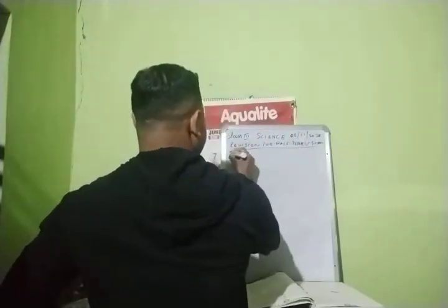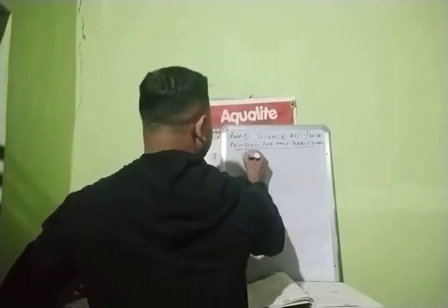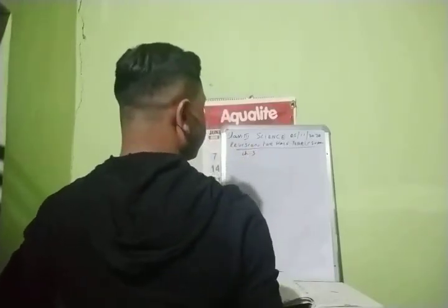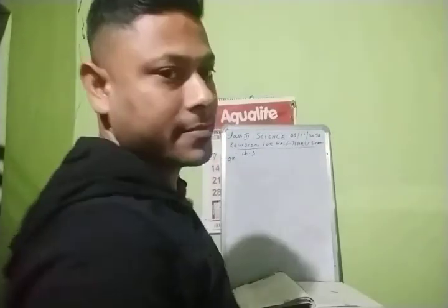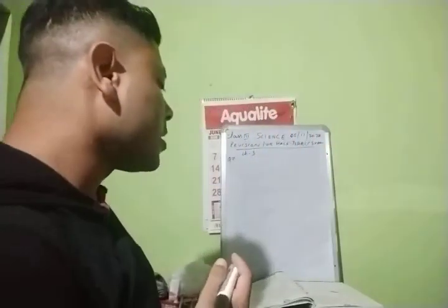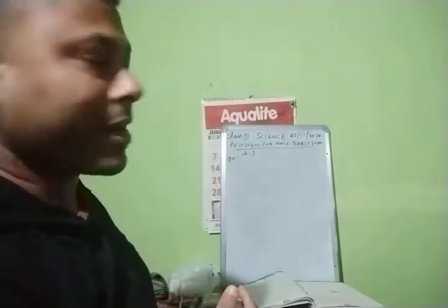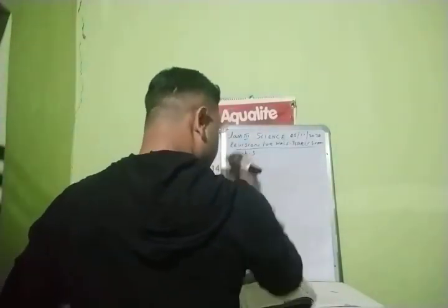Question number 7 only. This is of chapter number 3. Already 6 questions are completed, so today's number will be 7. Question number 7: Write any 3 common features of birds.